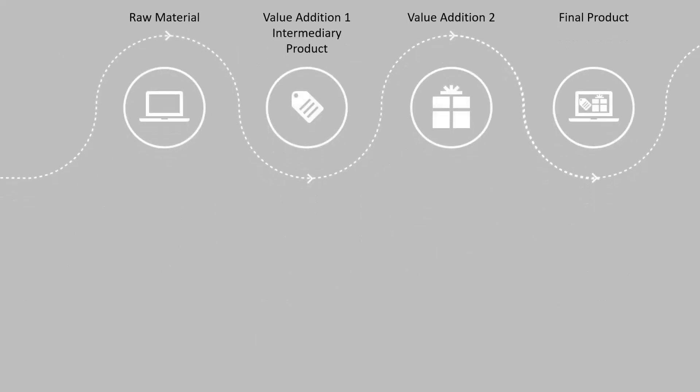Now how is this done in SAP? First we create a purchase order, but instead of the final product, we create a purchase order with the vendor as the first subcontracting vendor and the material as the intermediary product. Then we issue the goods from our inventory to the first subcontracting vendor. The subcontracting vendor does the value addition and sends this intermediary product to the second subcontracting vendor. In SAP we still record a goods receipt, but in this purchase order we mention the delivery recipient as the second subcontracting vendor instead of our own plant. With this setting, when posting a goods receipt the system understands that the goods are to be transferred from the first to the second subcontracting vendor and automatically picks up the appropriate movement type. Then we post an invoice for the first subcontracting purchase order.